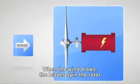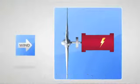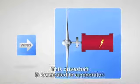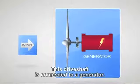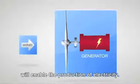When the wind blows, the blades spin the rotor, which in turn rotates the shaft fitted to the nacelle. This drive shaft is connected to a generator. This rotational energy enables the production of electricity.